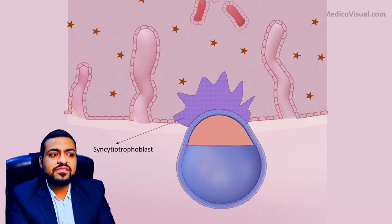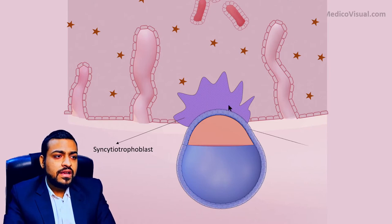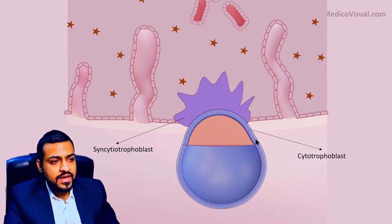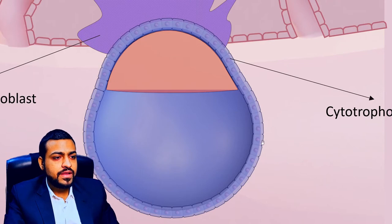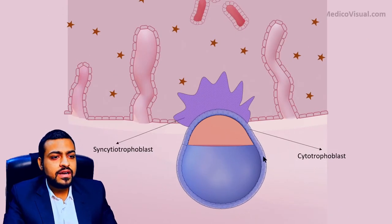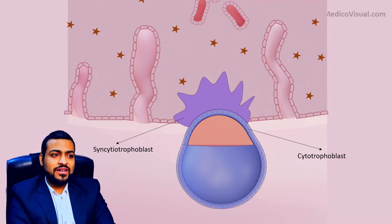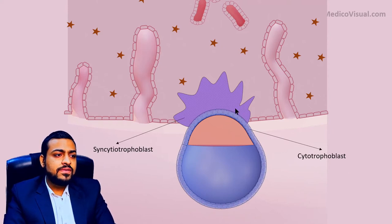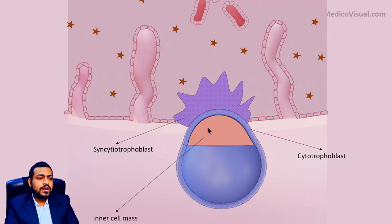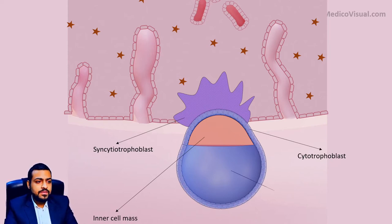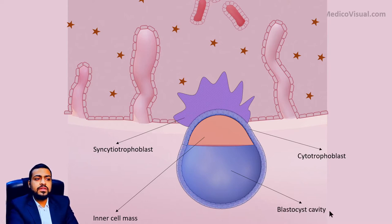The syncytiotrophoblast acts as a single structure, while the other layer of trophoblast has clear-cut cell membranes and clear-cut cellular boundaries. That type of trophoblast is called cytotrophoblast. So basically, the trophoblast now has two layers. Along with that, we have the inner cell mass or embryo proper that will form the actual embryo, and there is also the blastocyst cavity.